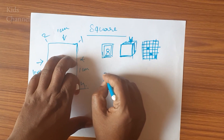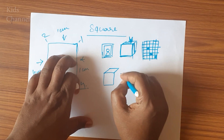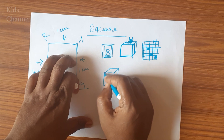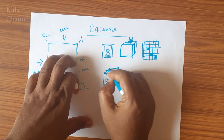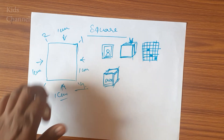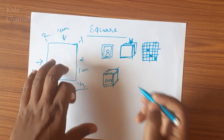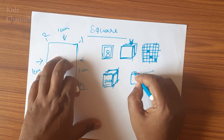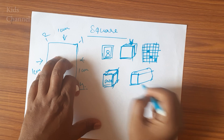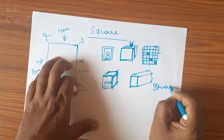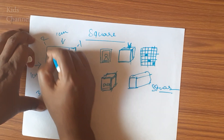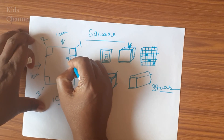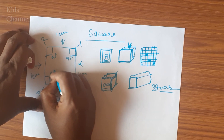And dice — the front view of a dice is in a square shape, which has 6 faces. And bread slice — the front shape of a bread slice looks like a square. It has 4 corners and 4 angles of 90 degrees each — that is 4 right angles.